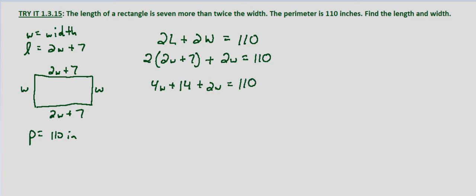Combining like terms we have 6W plus 14 equals 110. We'll subtract 14 from both sides.